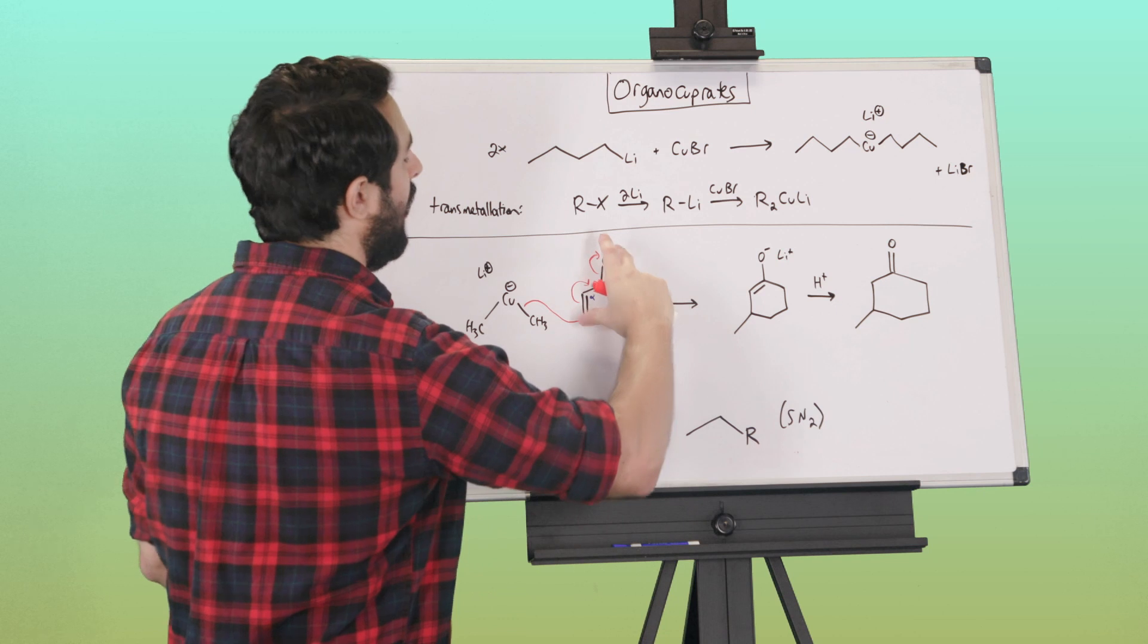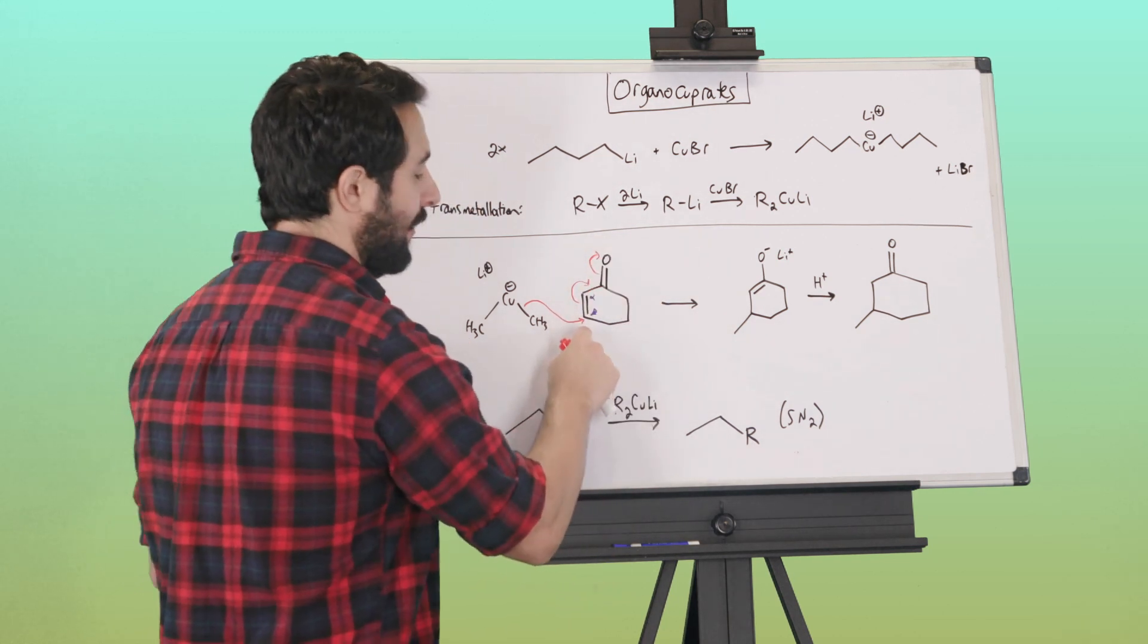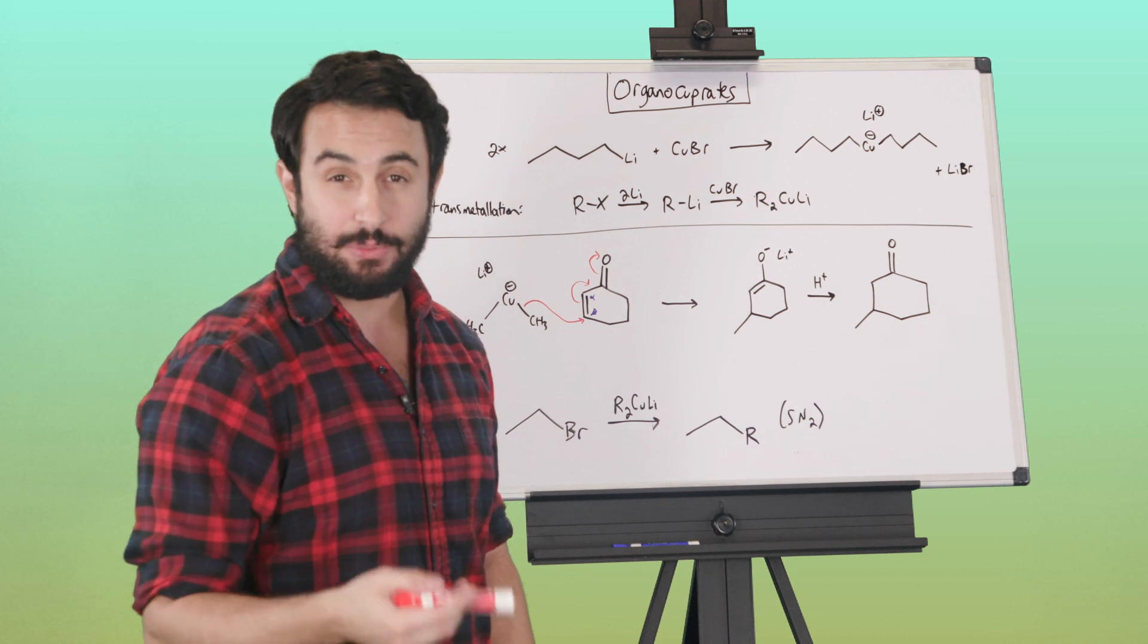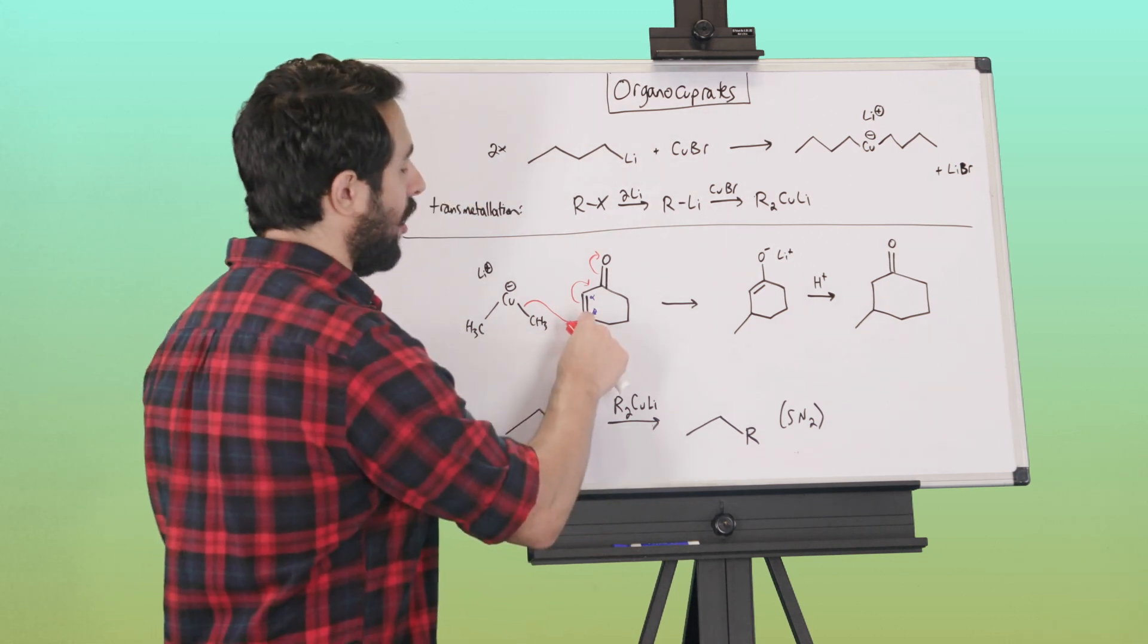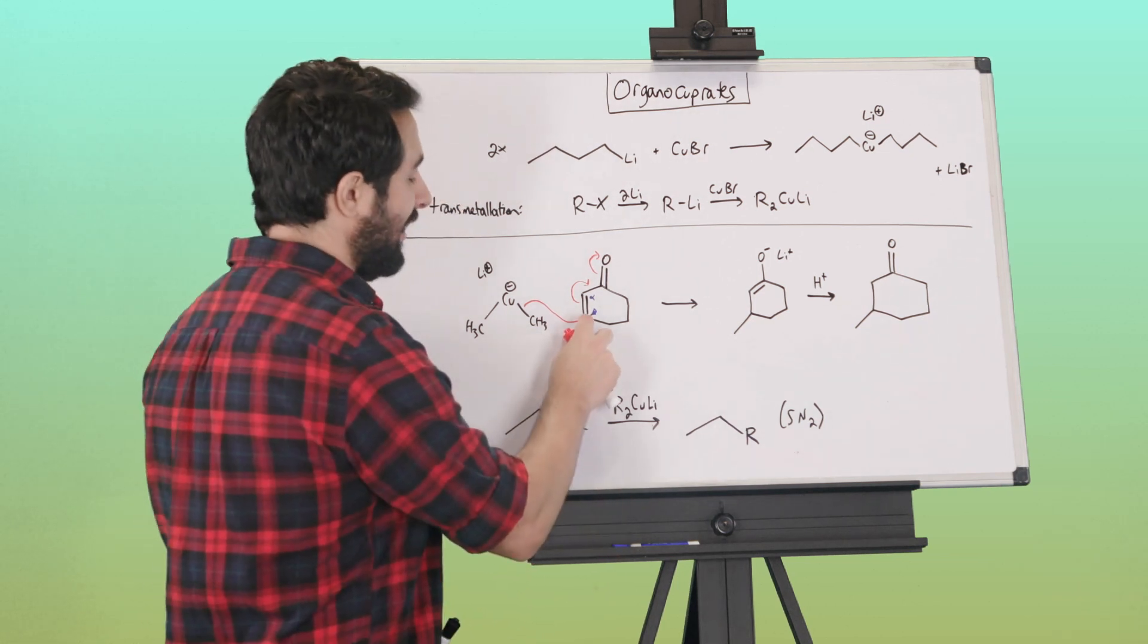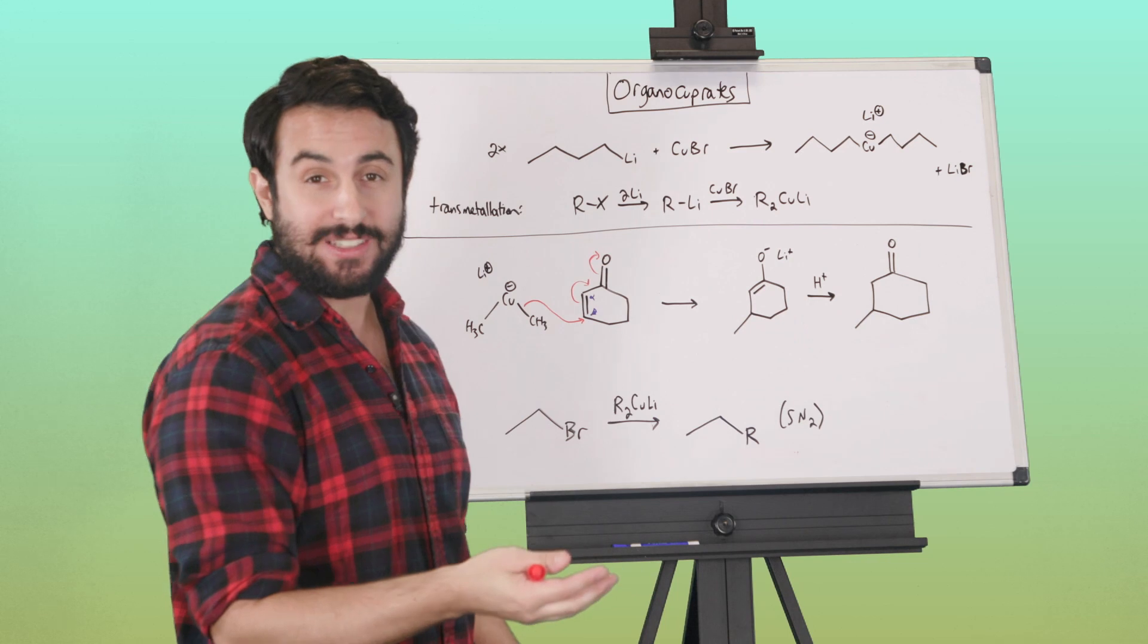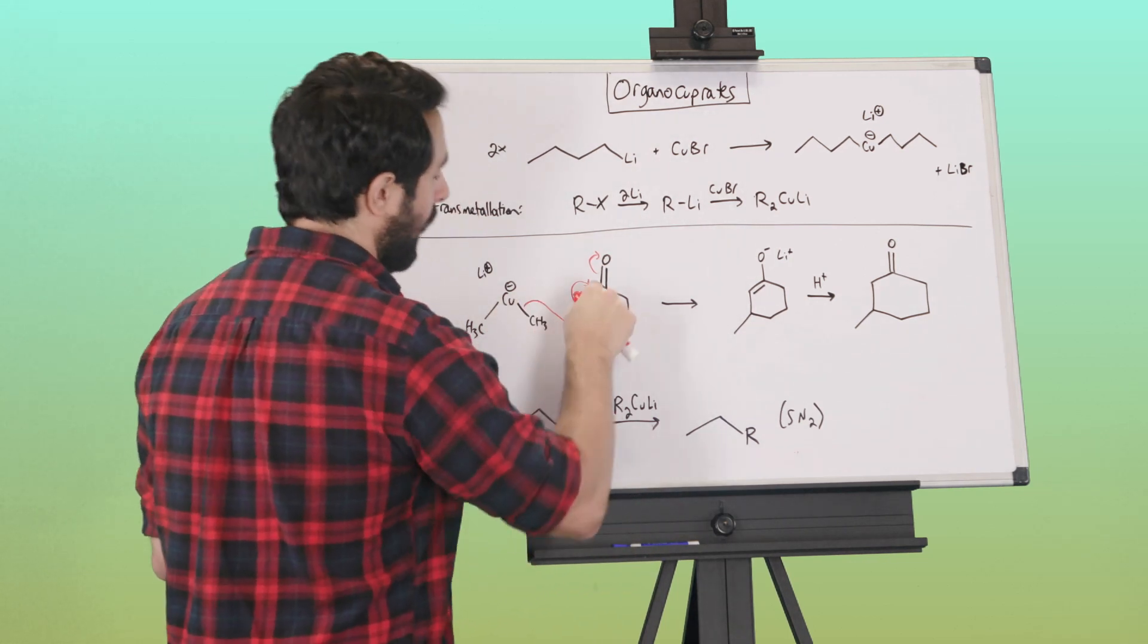It wouldn't be as strongly contributing because we'd have a formal negative and positive charge, but nevertheless it is a valid resonance structure. So there is one resonance structure where there's a formal positive charge here. That means on the composite there still is some electron deficiency at that site right there. So that explains why that's the site of attack for this compound.